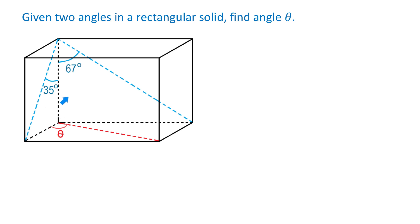Using these angles, how can we find angle theta? Notice that the given angles, as well as angle theta, all belong to right triangles. In the triangle that has angle theta, this angle is the right angle, and this diagonal represents the hypotenuse.